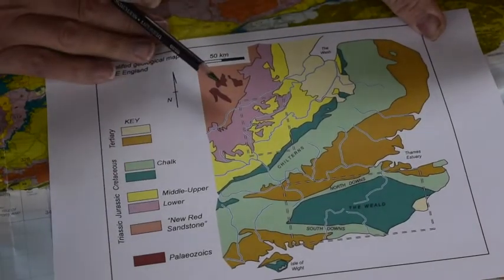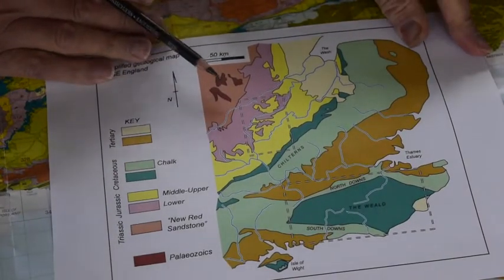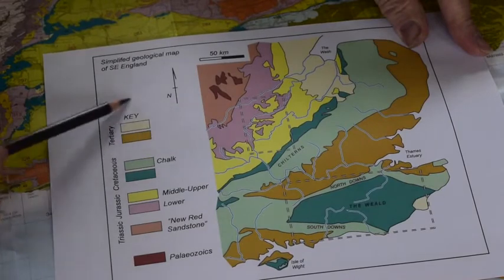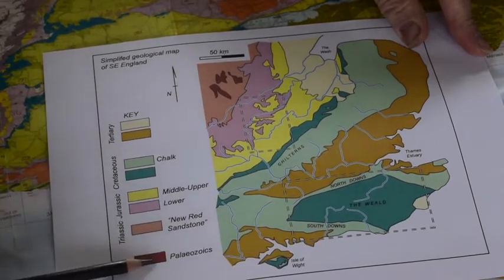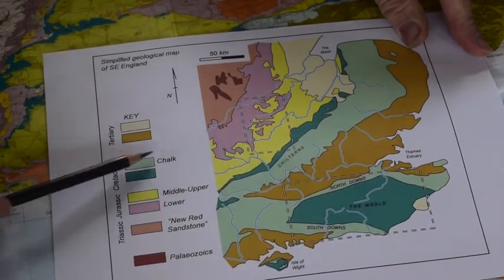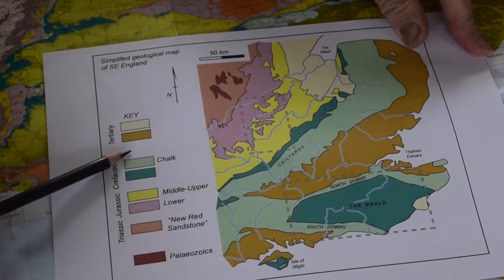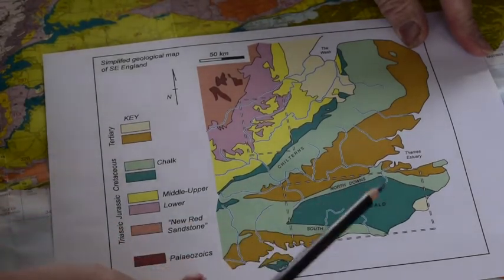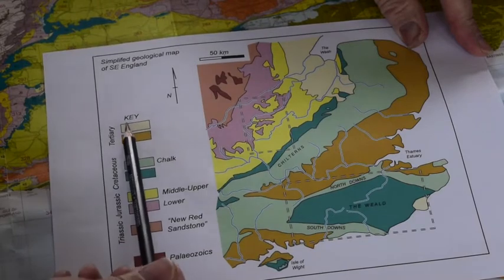When looking at a map like this, the first thing to look at is the key. We've got the rock sequence in here from oldest to youngest, right up to Tertiary, which is the day before yesterday geologically. So we've got rocks right up to almost the present day.